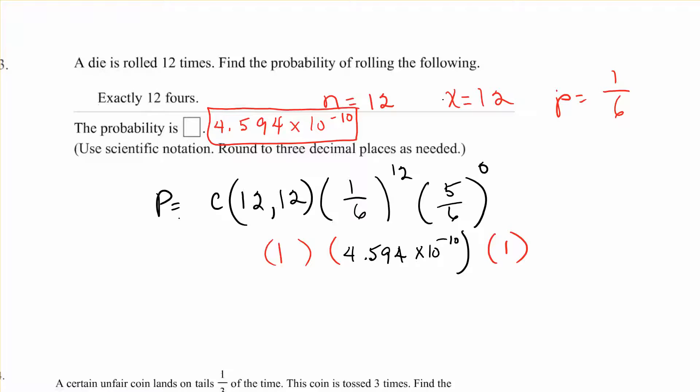A die is rolled 12 times. Find the probability of rolling the following: exactly 12 fours. So you're going to roll it 12 times and X equals 12. The probability of rolling a 4, well there's 6 numbers on a die, so the 4 would be 1 out of 6.